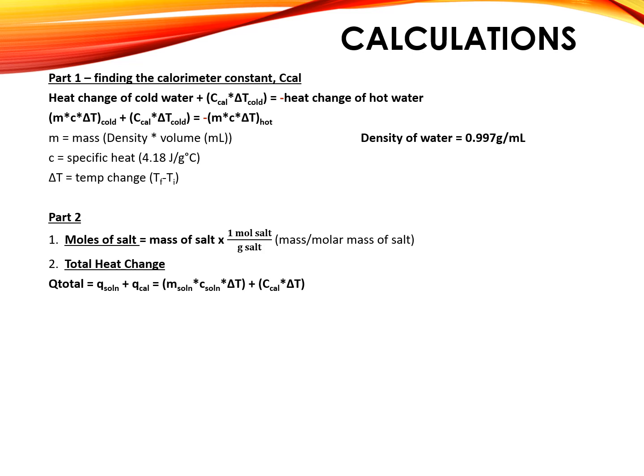Then we can find the total heat change of the entire solution, which is the heat change of the solution and the heat change of the calorimeter added together. For the heat change of the solution, that is the M times C times delta T equation.